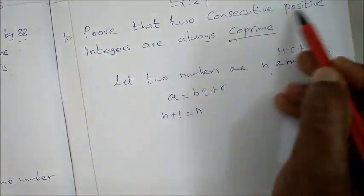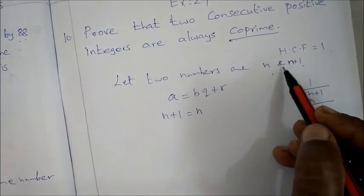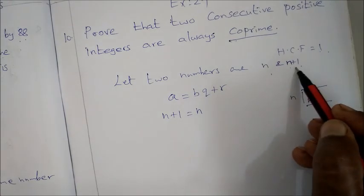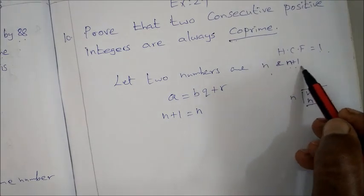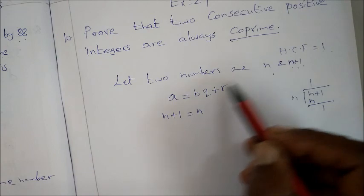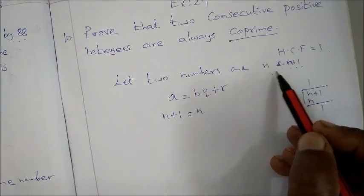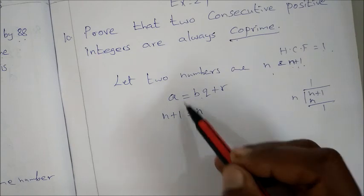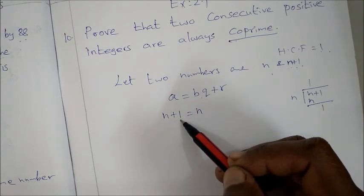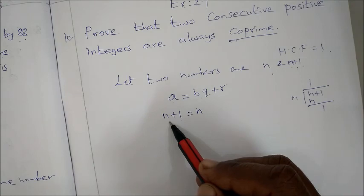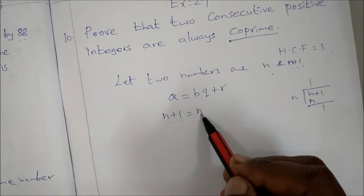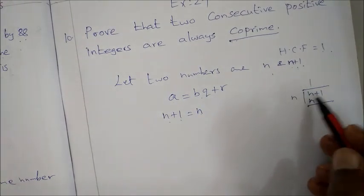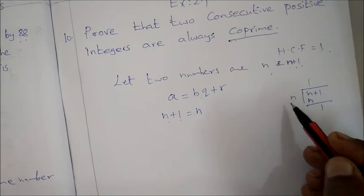So if two consecutive positive integers are there, we take two consecutive positive numbers as n and n plus 1. So we take the greater number in the process to find out the HCF using Euclid Division Lemma. Euclid Division Lemma's process is the Euclid Division Algorithm. So greater number is n plus 1, we divide n plus 1 by the smaller number n.